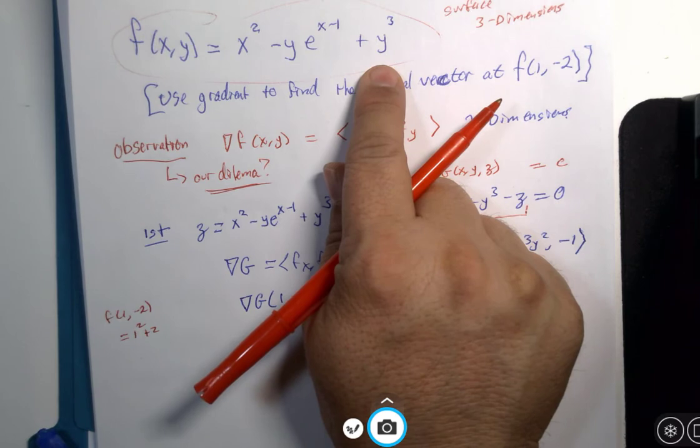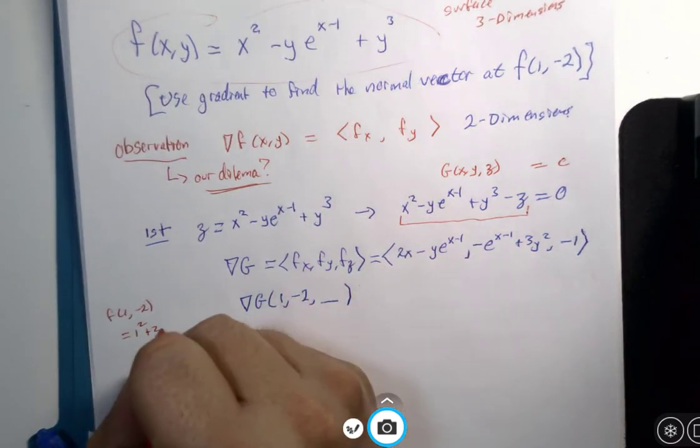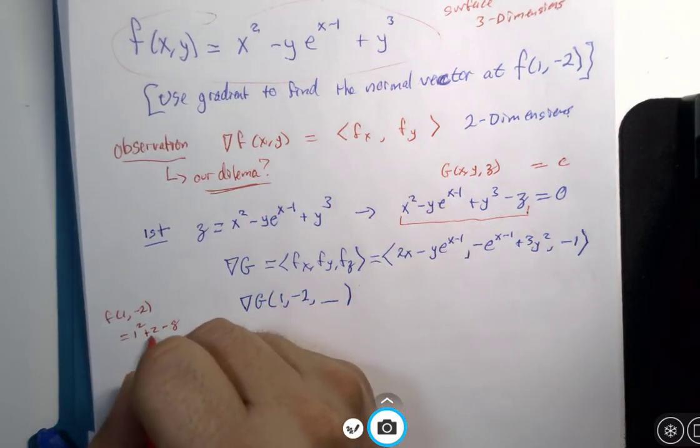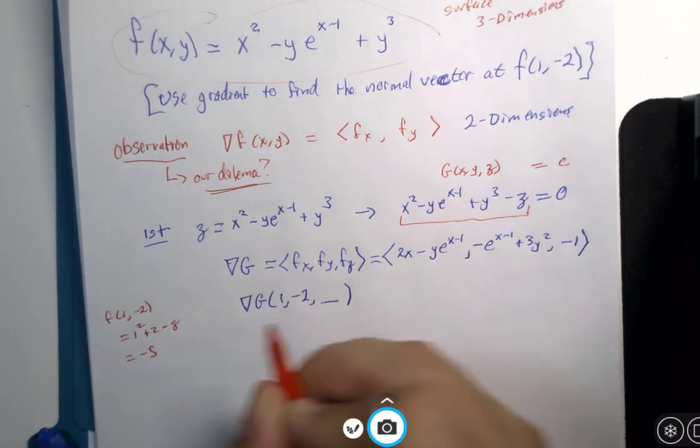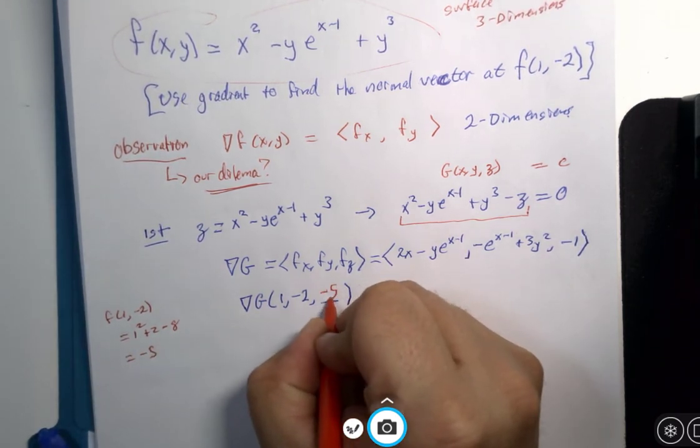negative 2 cubed is negative 8, so what is that, negative 5? Negative 5, negative 5.